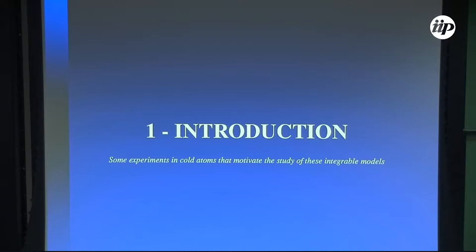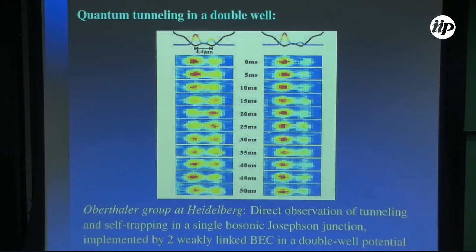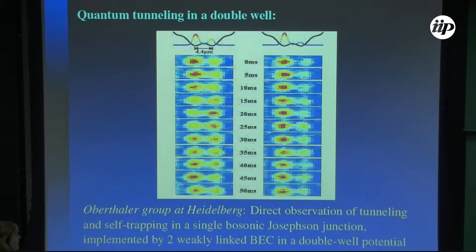Let me show you two experiments that motivated the study. The first experiment was performed by the group of Marcus Oberthaler in Heidelberg, where they did the direct observation of tunneling and self-trapping in two weakly linked Bose-Einstein condensates. They studied what happens with the density of atoms over time. Depending on the conditions, the atoms can tunnel or they are trapped in one of the wells. This is an experimental realization of tunneling and self-trapping, and in section two we will discuss an integrable model that presents these phenomena.